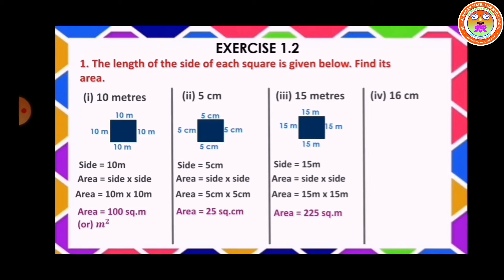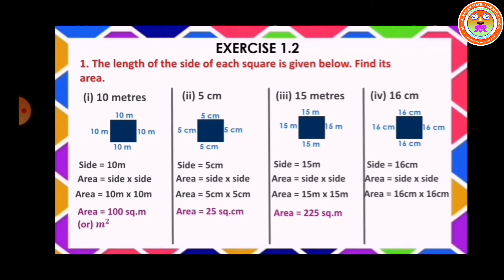Fourth sum: 16 centimeter. Draw one square, all the sides are equal so put 16 centimeter on each side. Side is equal to 16 centimeter. Area is equal to side into side, area is equal to 16 centimeter into 16 centimeter. The answer is area is equal to 256 square centimeter.